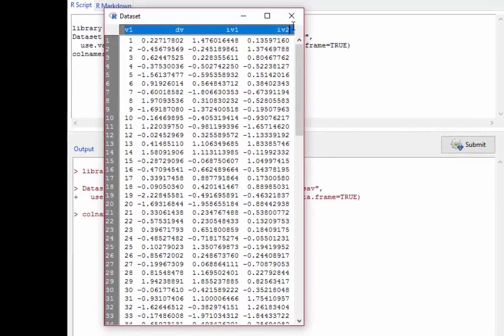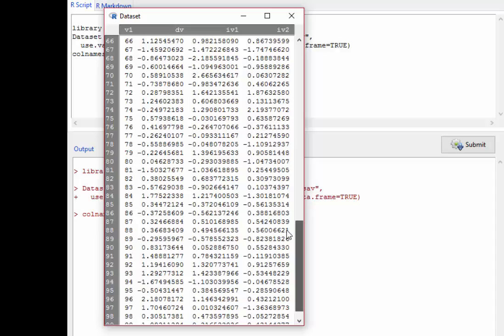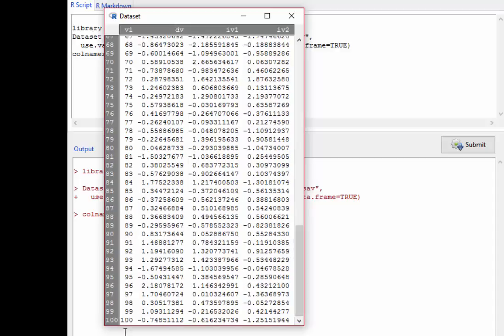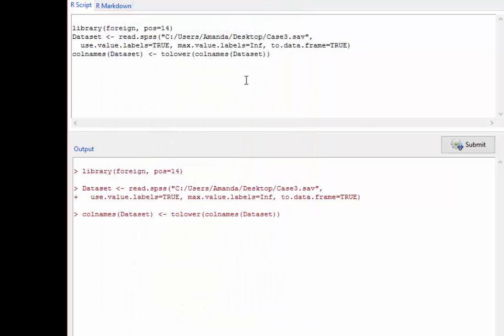Here up top you can see I've got variable 1, a dependent variable, independent variable 1, independent variable 2. Each row is a case just like it has been all semester. If you scroll down you can see there are 100 people in my data set, 100 people and we have four variables.